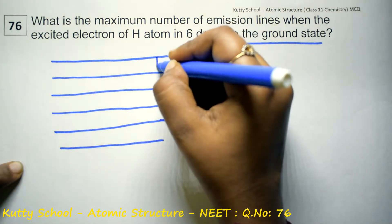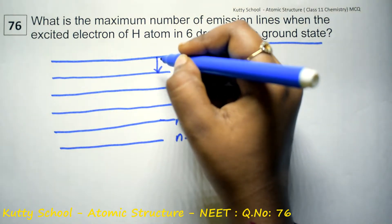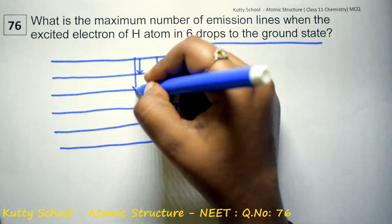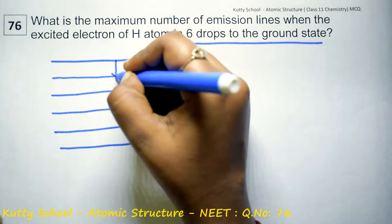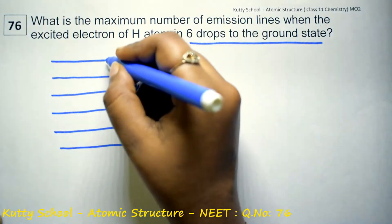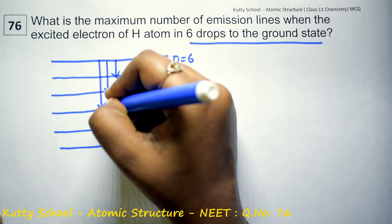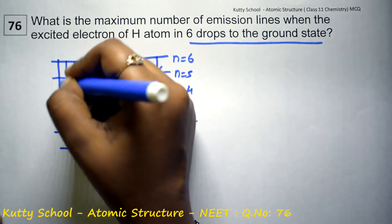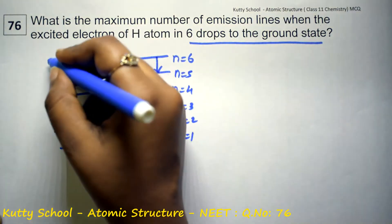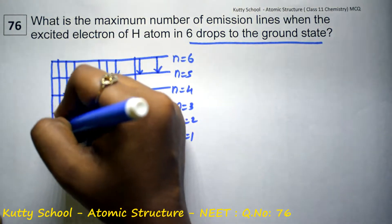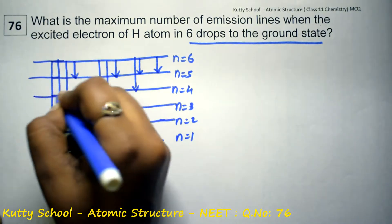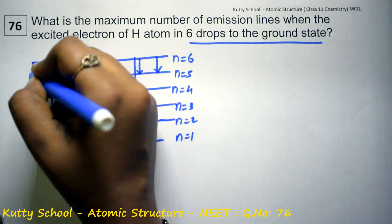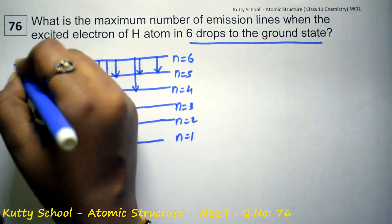First, n=6 to n=5 — that is the first transition. Then n=5 to n=4 — that transition. After that, to n=3: first from 5, next from 4, next 3. After that, to n=2: first from 5, then 4, then 2. Next, coming to 2. Then finally coming down to the last ground state.